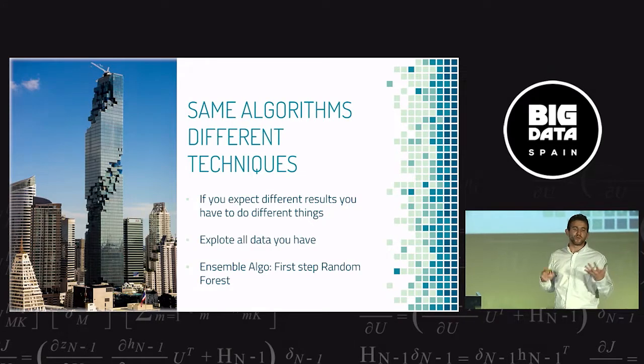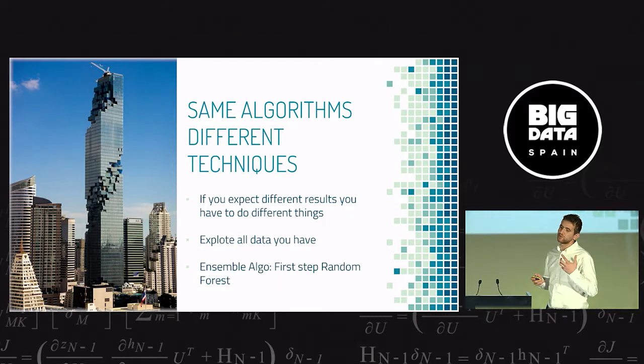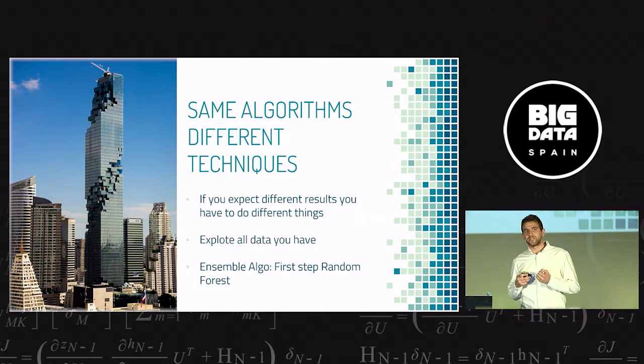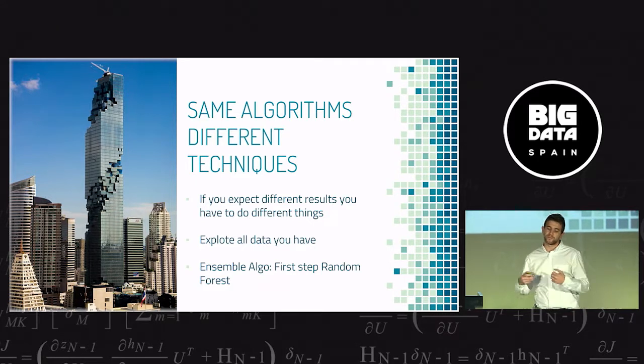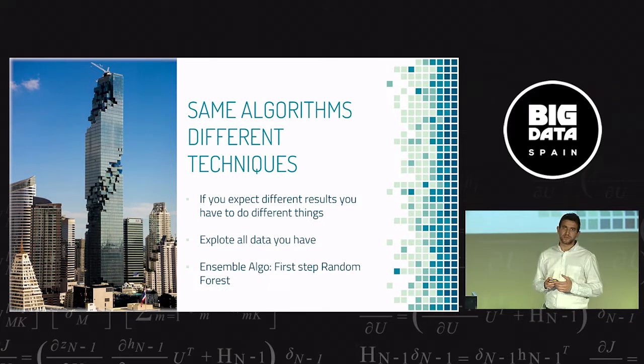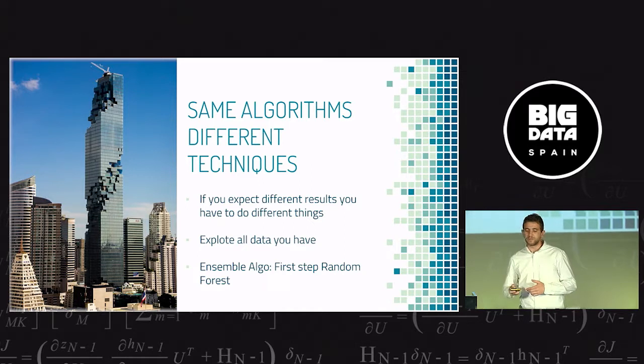What I propose: I was not good with those techniques because I think you are modifying the data as it appears in nature. This new algorithm that I propose has the goal to exploit all the data you have as you receive from nature. This new algorithm is an ensemble algorithm. I think it's easier to understand explaining first random forest.